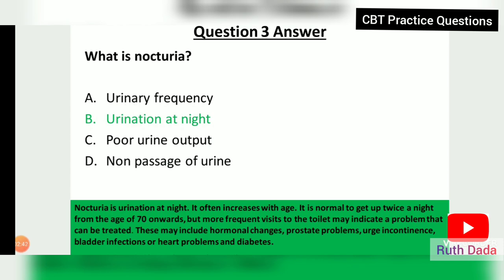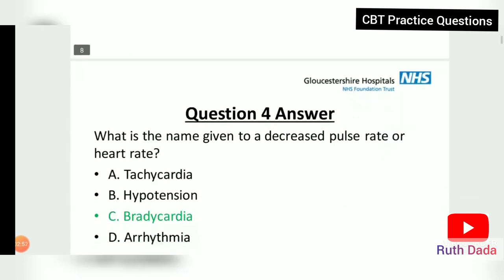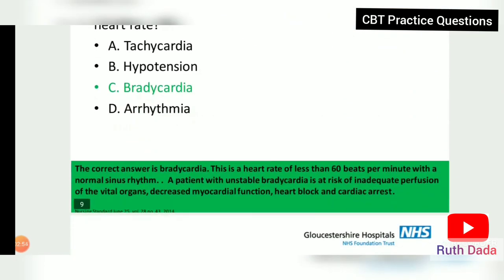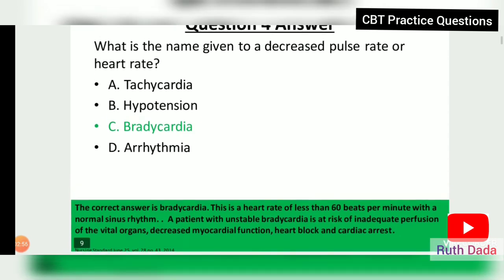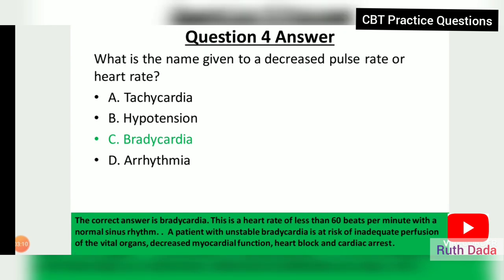Question 4: What is the name given to a decreased pulse rate or heart rate? The answer is bradycardia — a heart rate of less than 60 beats per minute. A patient with unstable bradycardia is at risk of inadequate perfusion of vital organs, decreased myocardial function, heart block, and cardiac arrest.